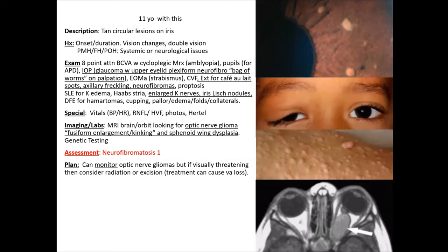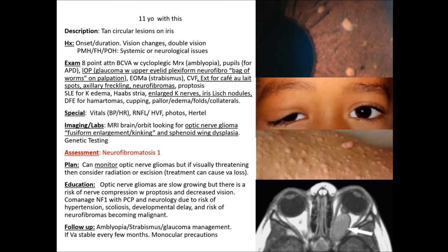For patient education and follow-up: optic nerve gliomas are slowly growing but risk nerve compression, proptosis, and decreased vision. Co-manage with PCP and neurology for NF1 counseling due to risk of hypertension, scoliosis, developmental delay, and risk of neurofibromas becoming malignant. Follow up for amblyopia, strabismus, and glaucoma management; vision stable every few months; give monocular precautions.